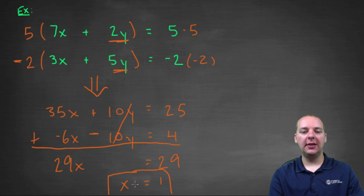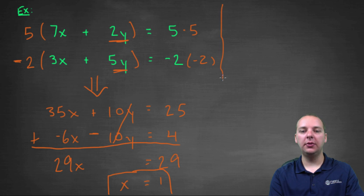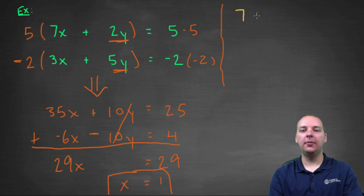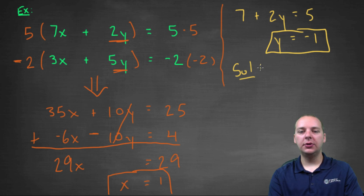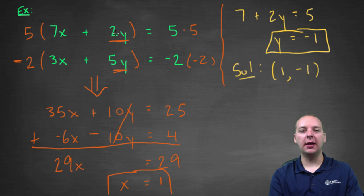Dividing both sides by twenty-nine gives x equals one. Take that x value and plug it back into any equation — I'll use the first one: seven times one is seven, plus two times y equals five. Solving for y gives y equals negative one. So the solution is the ordered pair (1, -1). I'll leave it to you to verify that this makes both equations true.